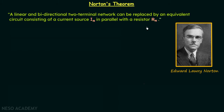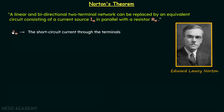The important thing is to understand what In and Rn are. In is the short-circuit current through the terminals. When you compare In with Vth, you will find that in Thevenin's theorem, while calculating Vth, we were open-circuiting the terminals and finding the voltage across those open terminals. But here we are short-circuiting the terminals and then finding the current, known as In.